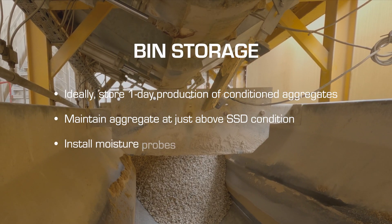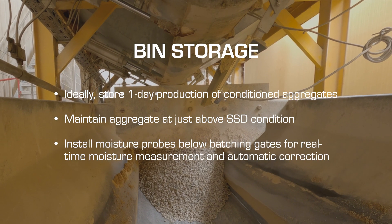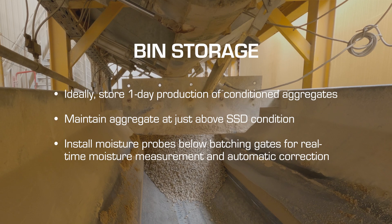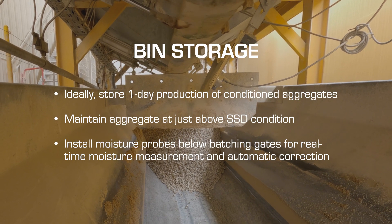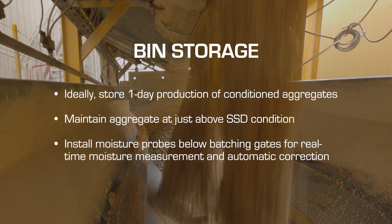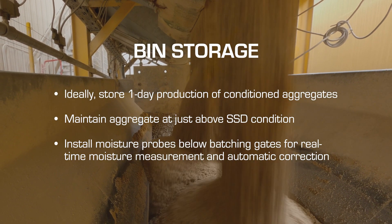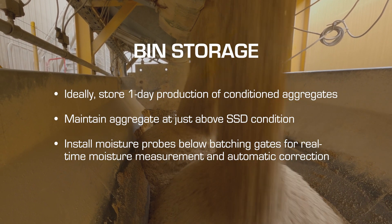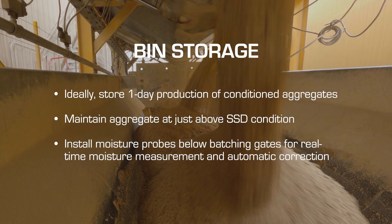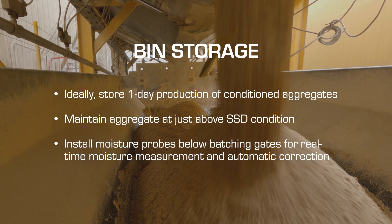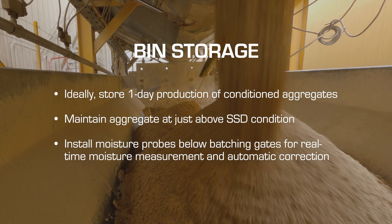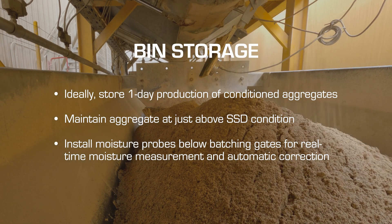Install moisture probes below the aggregate discharge gates to automatically compensate for moisture variance from batch to batch. Plant operator and QC personnel should be trained in checking probe calibration and calibrate the probes if necessary.